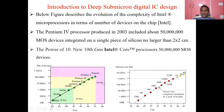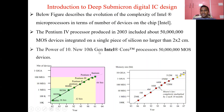Here we can see how Intel processors and memories transformed from a small number of transistors into lakhs and billions of transistors placed on the chip. The figure below describes the evolution of the complexity of Intel microprocessors in terms of number of devices on the chip. The Pentium 4 processor produced in 2003 included about 50 billion MOS devices integrated on a single piece of silicon no larger than 2 by 2 centimeters. The latest 10th generation Intel Core processor has placed 50 billion transistors on a single chip.